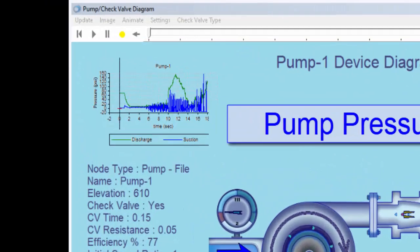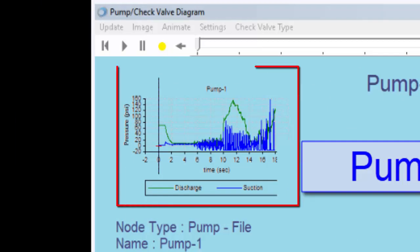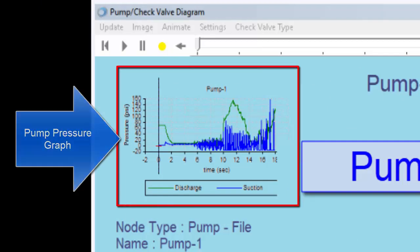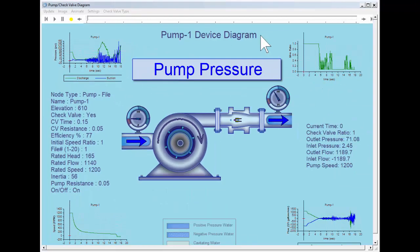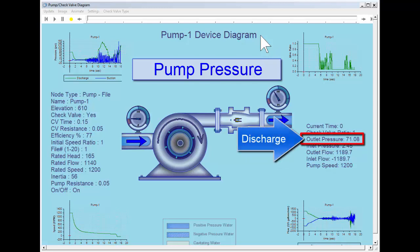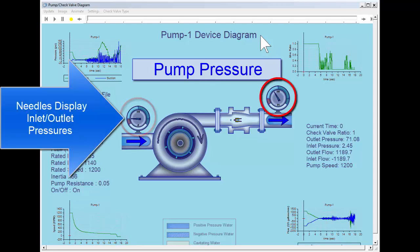Pump pressure is shown in a graph with two traces, one for the suction pressure and one for the discharge pressure. Inlet and outlet pressures are also shown numerically in the dashboard area. Inlet and outlet pressures are also displayed using needle gauges which show sub-atmospheric pressure in a red zone.